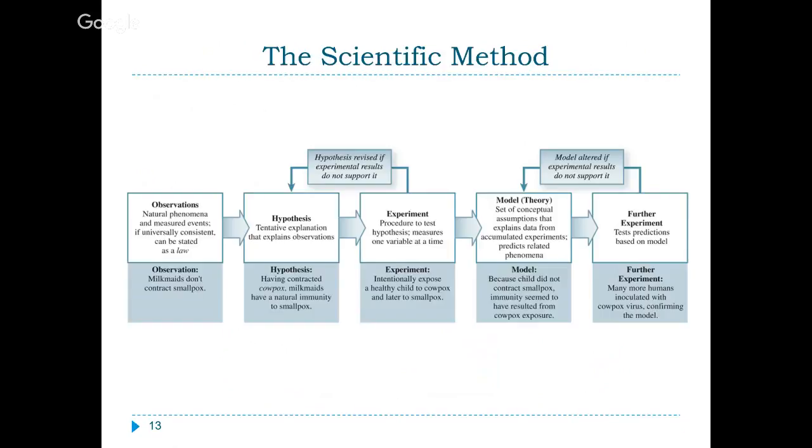So last thing to talk about here is the scientific method. And this is just simply the process that has been kind of well-defined as to how we approach trying to explain the world around us. So we always start with our observation. So what natural phenomena do we see? And then how are we going to explain it? So in this particular example, we have an observation that milkmaids don't contract smallpox. Okay, so now we want to come up with a tentative explanation as to why we see this observation. The hypothesis here is having contracted cowpox, milkmaids have a natural immunity to smallpox. So how do we test this? We set up an experiment to prove whether our hypothesis is correct. And this is the way this works. And a lot of scientists have gotten in trouble because what they'll do is they will fudge their results to say, oh no, this supported my hypothesis. It supported my theory on this. You can never change your numbers. You don't change the results that you get to match the hypothesis.